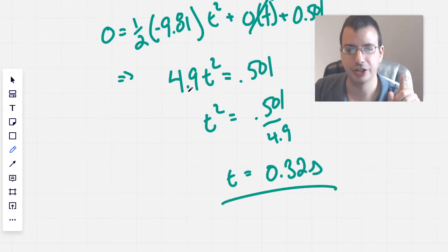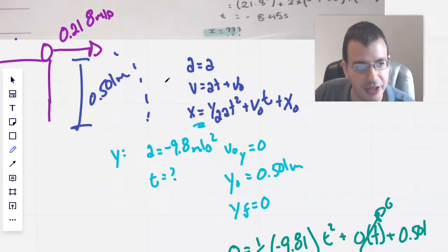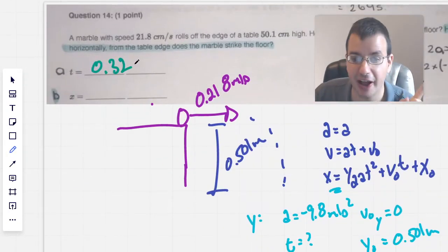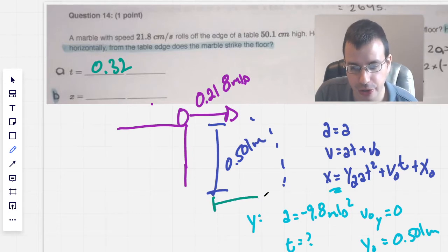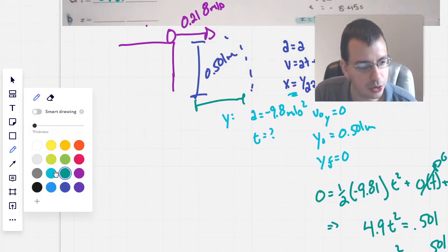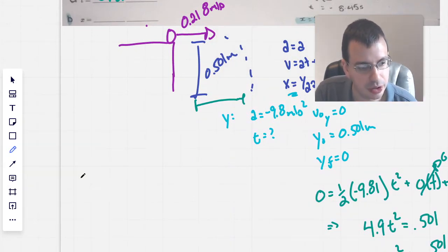So now we know how long it's going to take for it to fall. That's why I think it asked us time first. Next, we want to find out how far it goes. So this, we're going to do the same process or similar process, except we're going to do it in the x direction now.